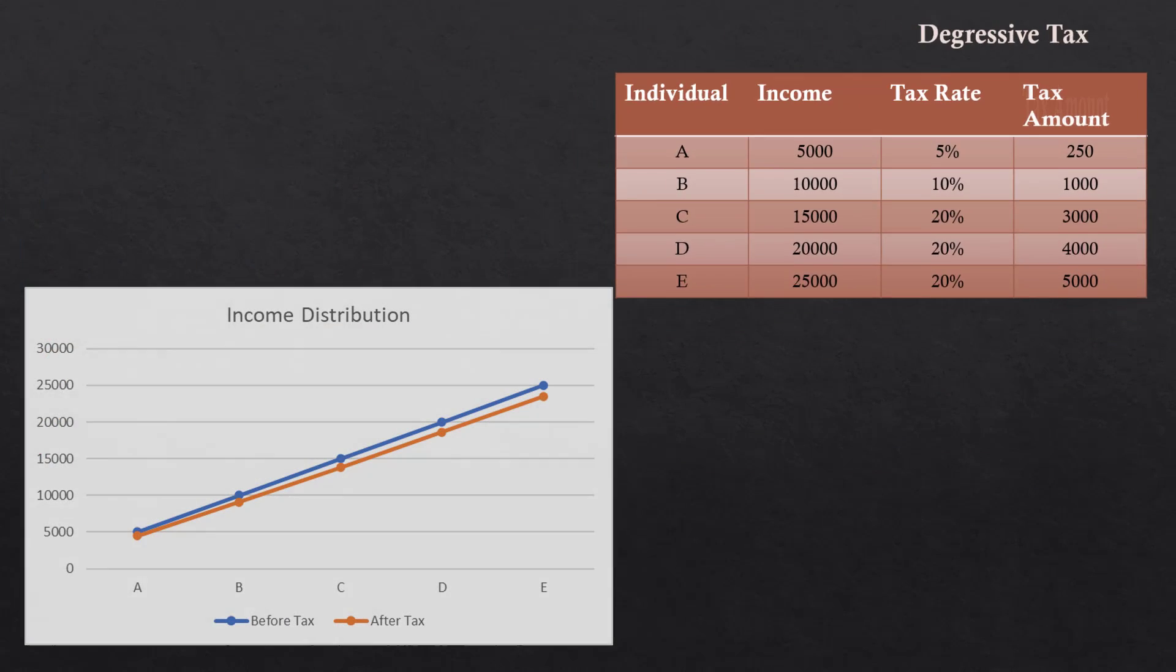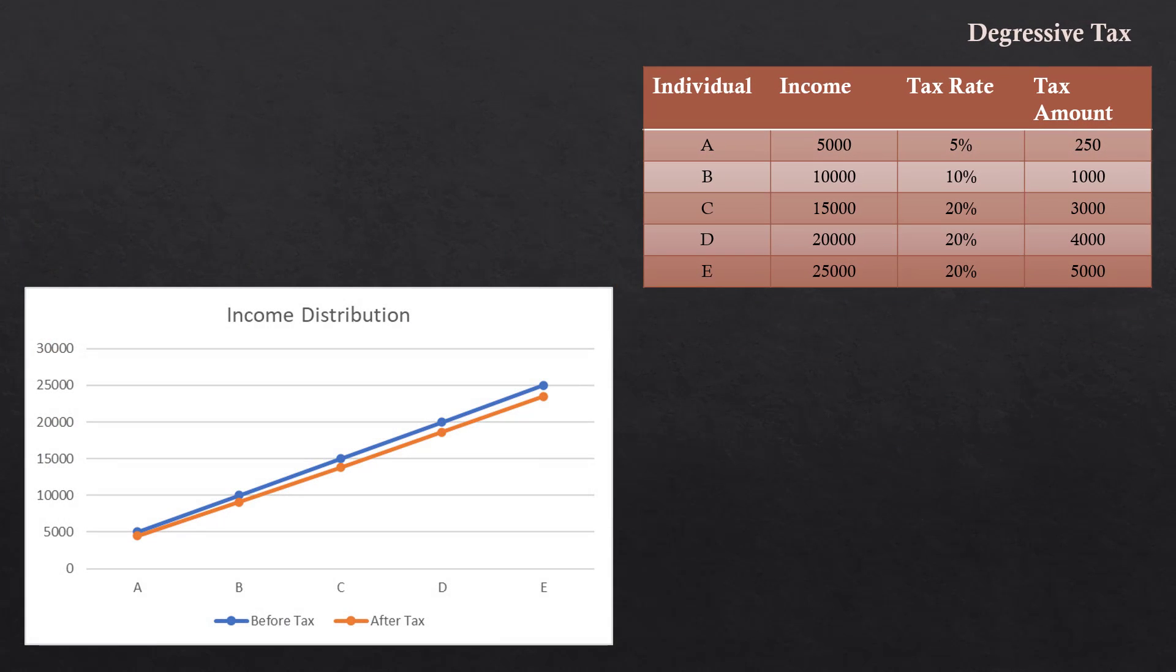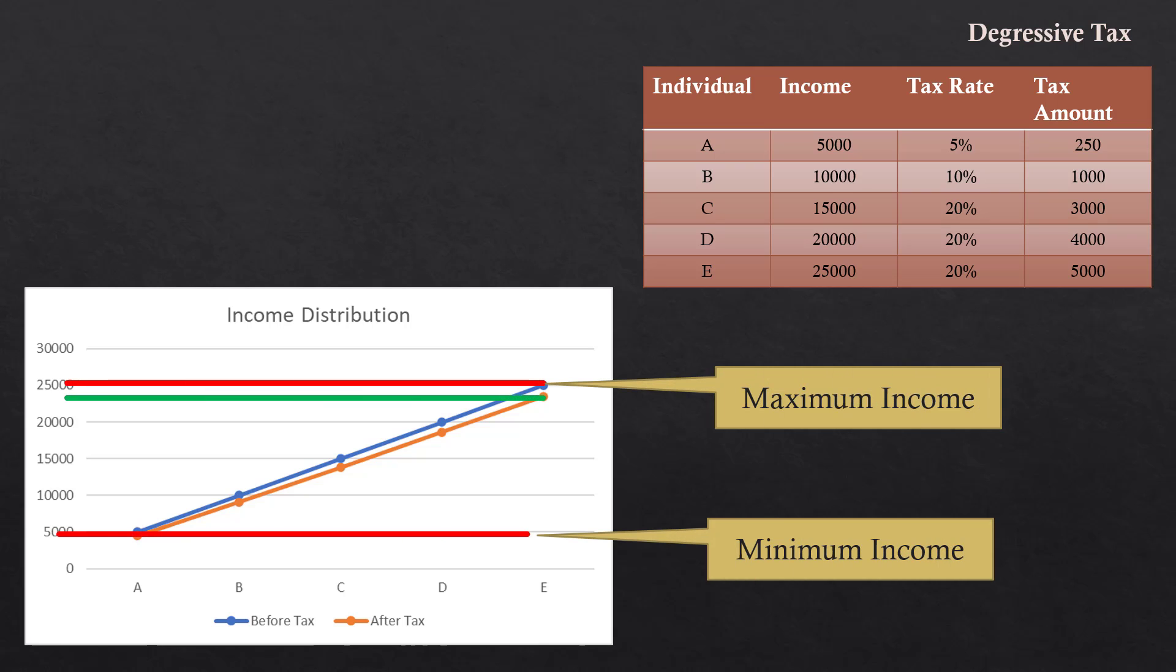Let us see its effect on income distribution. It also reduces the income inequality but not as less as proportional taxation and not as more as progressive taxation. It lies in between the two. Its effect on income redistribution is moderate.